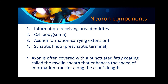The axon is an information-carrying extension of the neuron. The synaptic knob, also called the pre-synaptic terminal, is the terminal end with respect to the synapse. There is a pre-synaptic terminal and a post-synaptic terminal at the synapse.